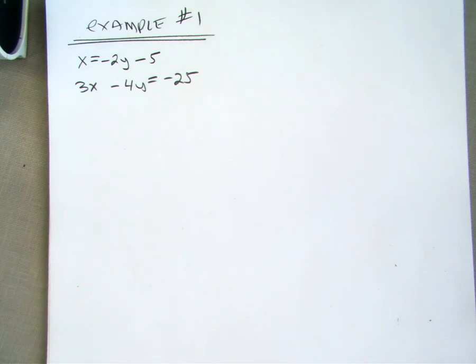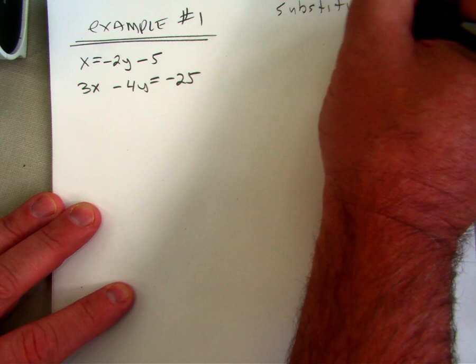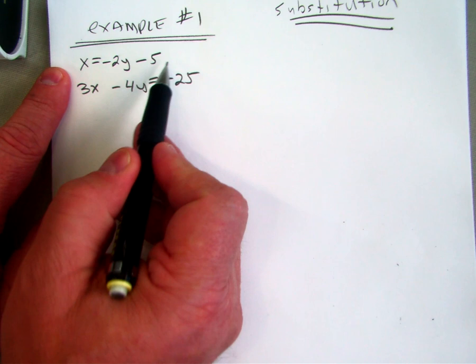Okay, so I have an example here. We're going to use substitution to solve this. So when I look at this equation, I have x equals negative 2y minus 5, and 3x minus 4y equals negative 25.